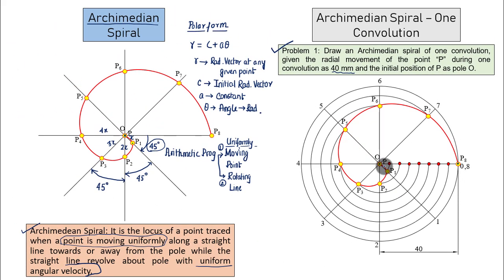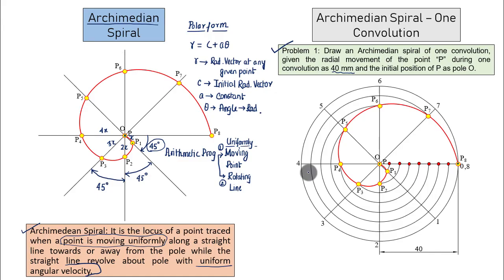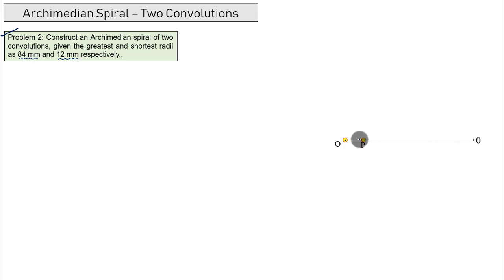Now let's take up the example for two convolutions — slightly more work but manageable. The problem: construct an Archimedean spiral of two convolutions given the greatest and shortest radii as 84 millimeters and 12 millimeters respectively. In the previous problem the shortest radius was zero and greatest was 40 mm; here the shortest radius is 12 mm and the greatest is 84 mm. The distance from P to 0 is 84 minus 12 equals 72 mm.